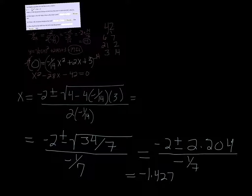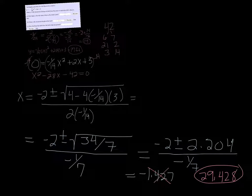So let me try subtracting. So negative 2 minus 2.204 divided by negative 1 7th, that gives me 29.428. So that is going to be a more reasonable answer. That is how far the ball will be once it hits the ground.